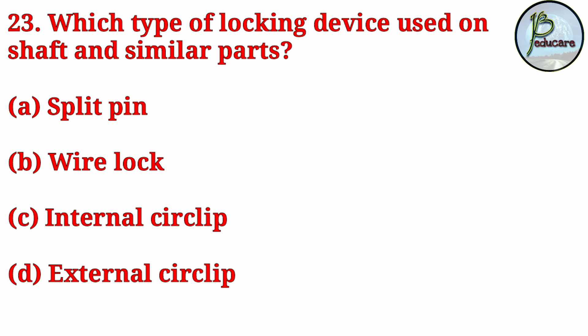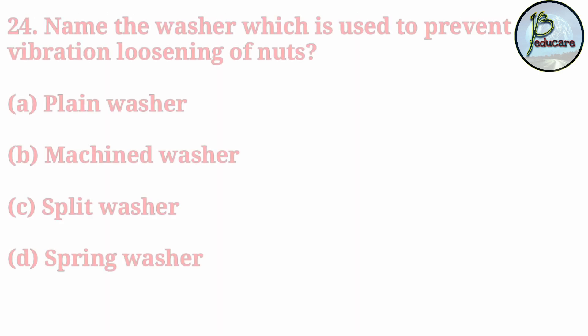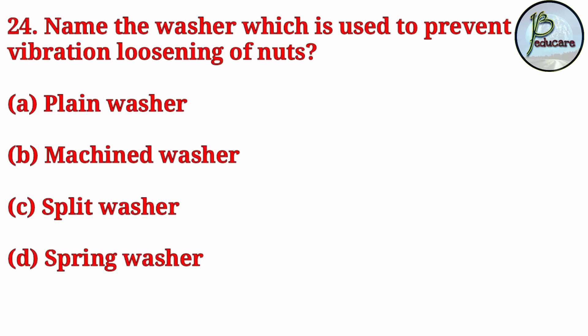Next question: which type of locking device is used on shafts and similar parts? The correct answer is option D: external circlip.